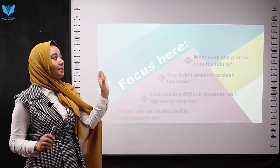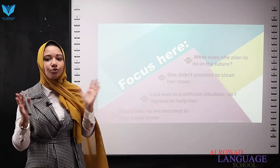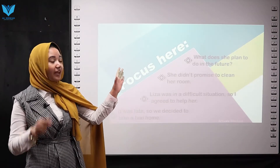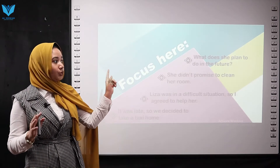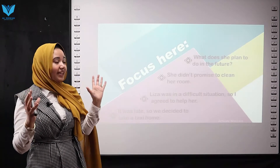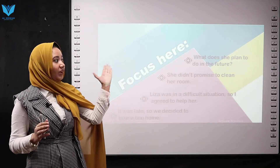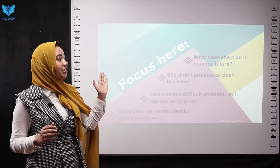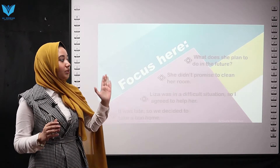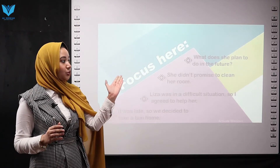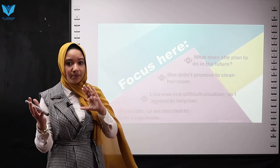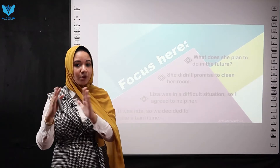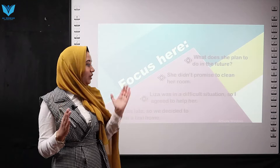What does she plan to do? We have the verb 'plan,' and after 'plan' we have 'to' plus the base form — 'to do.' This is an infinitive. She didn't promise to clean her room. After 'promise,' we use 'to' plus the base form — 'to clean.' This is an infinitive.